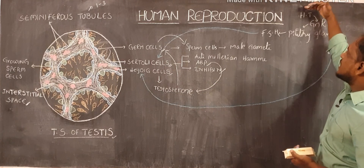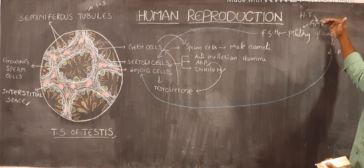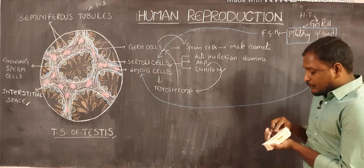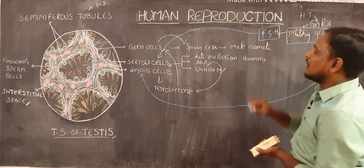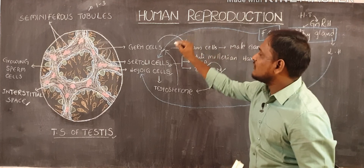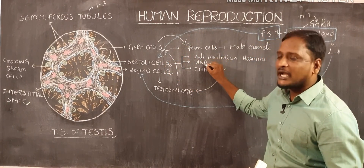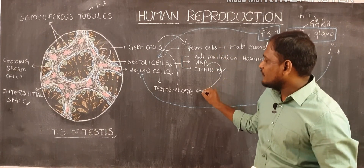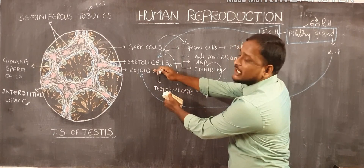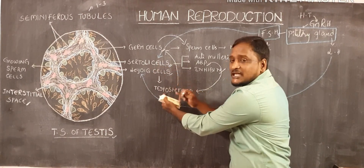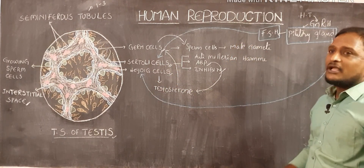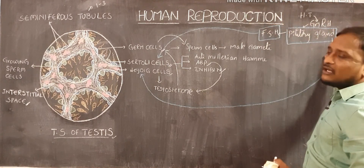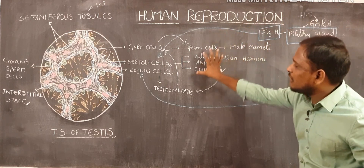Observe here. First, hypothalamus is producing gonadotropin-releasing hormone. This GnRH stimulates the pituitary. The pituitary releases follicle-stimulating hormone (FSH). FSH acts on Sertoli cells, and Sertoli cells release anti-Mullerian hormone, androgen binding protein, and inhibin. At the same time, androgen binding protein increases the concentration of testosterone secreted by Leydig cells. Leydig cells are stimulated to synthesize testosterone by luteinizing hormone. So GnRH stimulates the pituitary to produce FSH and LH, and because of these two hormones, all these products are produced.